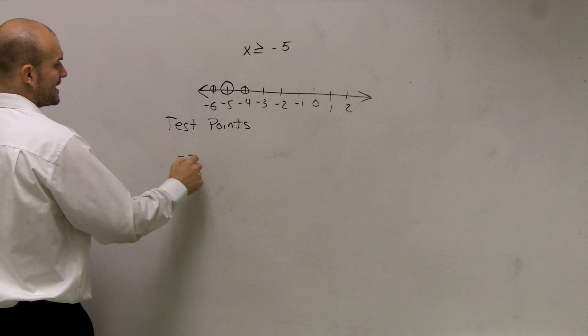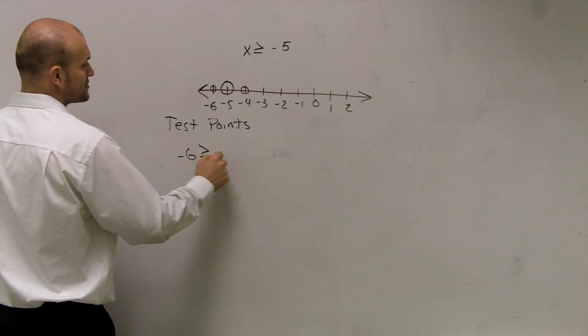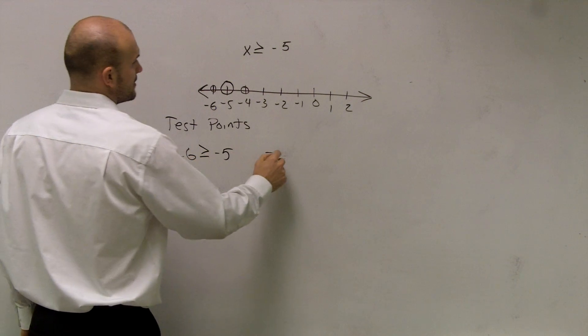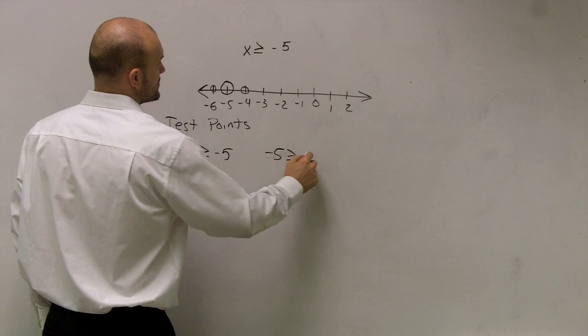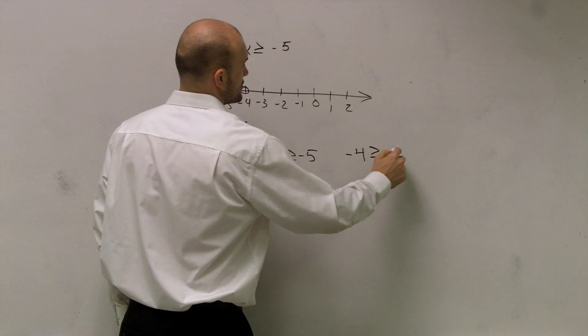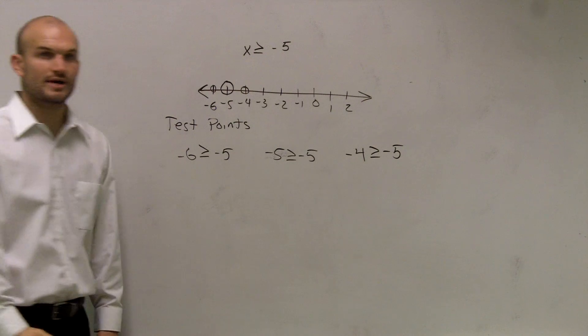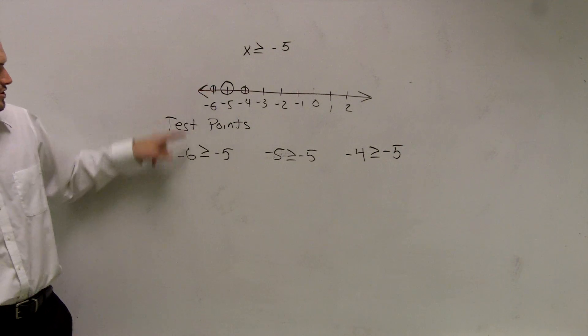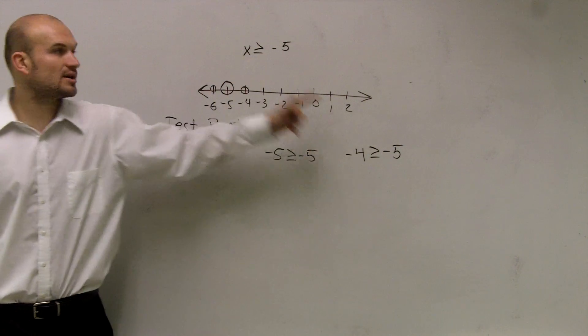So now I'll say negative 6 is greater than or equal to negative 5. Negative 5 is greater than or equal to negative 5. And negative 4 is greater than or equal to negative 5. Okay? Does everybody see how what I did was I took each one of those points and I plugged them in for x?